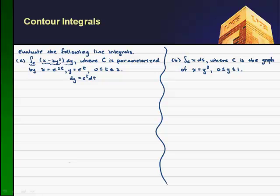So we have everything we need to rewrite this contour integral. I get the contour integral of x minus 2y squared dy is going to equal to the integral from 0 to 2 of e to the 2t minus 2e to the 2t times e to the 2t times e to the t dt.